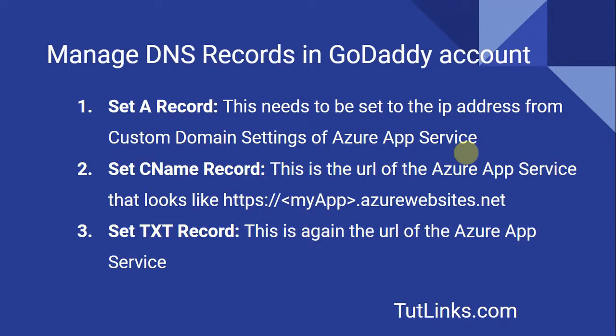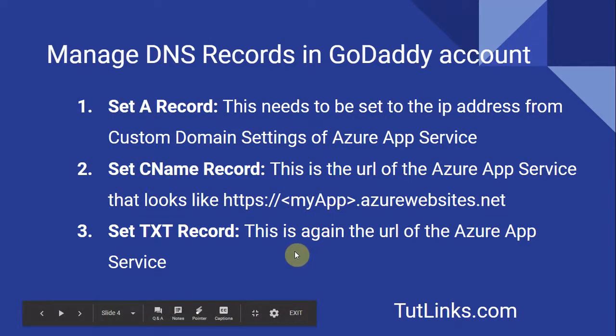To set the A record, use the IP address from the custom domain settings of the Azure App Service you have created. The CNAME record needs to be the URL of the Azure App Service, which looks like https://myapp.azurewebsites.net, where 'myapp' is the name of your app. Similarly, the TXT record is also the URL of the Azure App Service.